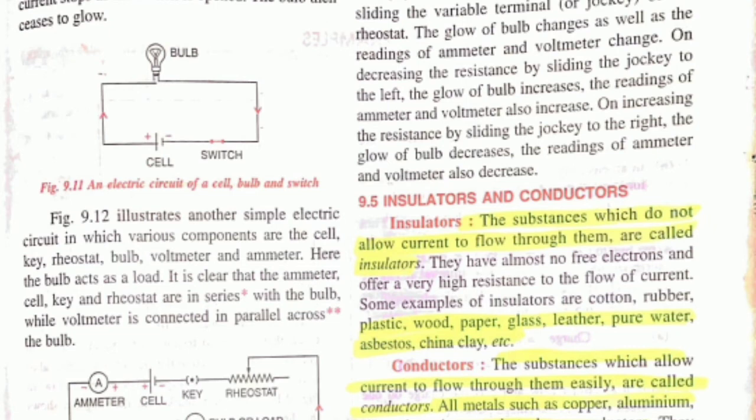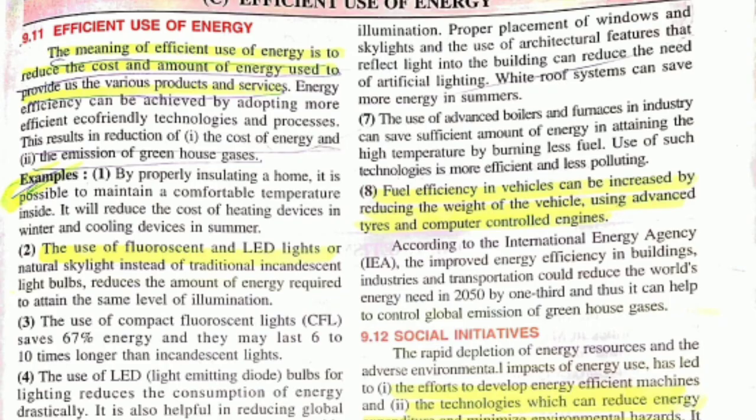Numericals are coming by the way, and exercise C is coming - efficient use of energy, or in simple language conservation of energy, which means use less electricity. Just read it once. And now the chapter is finished, nothing else is there. Just remember the terms, the examples, differentiate between, and the diagrams as well. Don't get confused between those things.